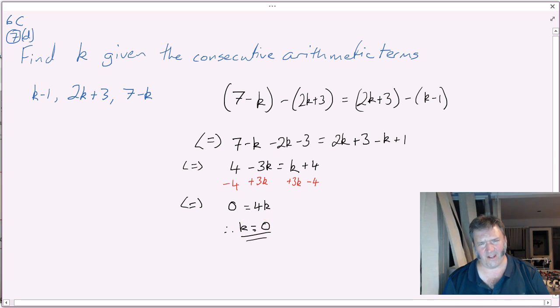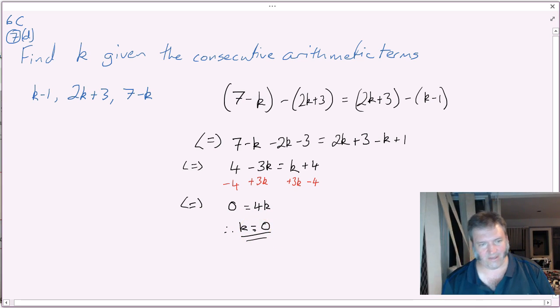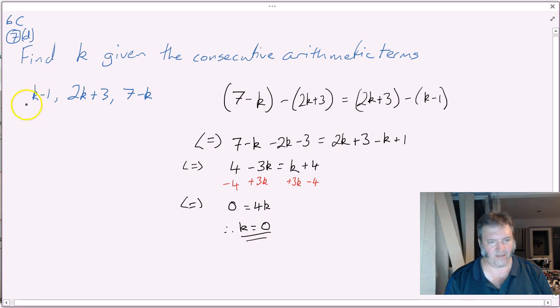Does that make sense? Because it's pretty unusual to get k equaling 0. If k equals 0, what would this sequence become? 0 minus 1 would be negative 1. 2 times 0 is 0, plus 3 is 3. 7 minus 0 is 7.